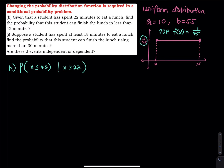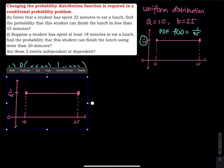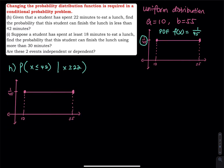Here is the graph. We bring the graph back and sketch the area. 22 is here and 42 is over there. So this probability is the same as the probability that x is between 22 and 42. Most people might think we just take (42 − 22) times the height to get the area. But it is not that simple, because this is a conditional probability.